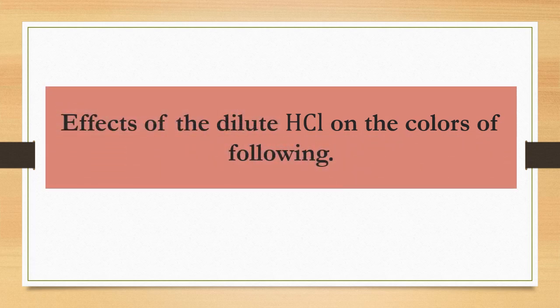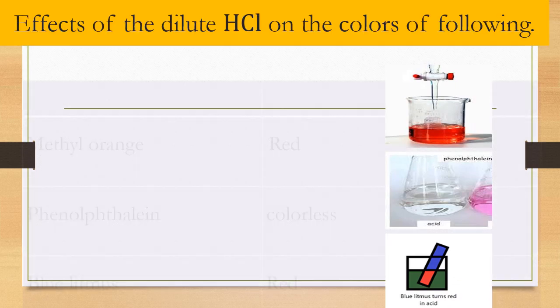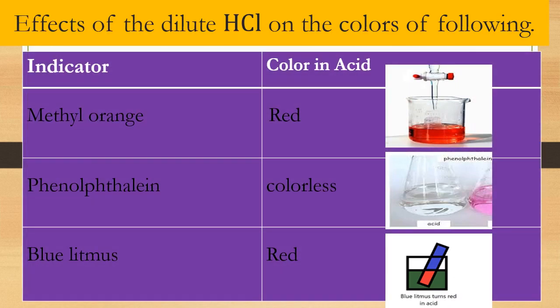Effect of the dilute HCl on the colors of the following: methyl orange turns red in acids, phenolphthalein turns colorless in acids, while blue litmus turns into red in acids.